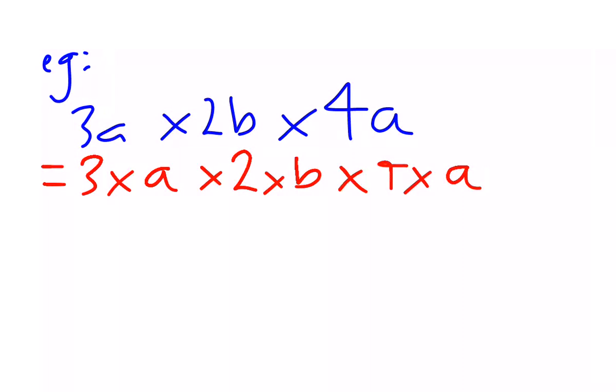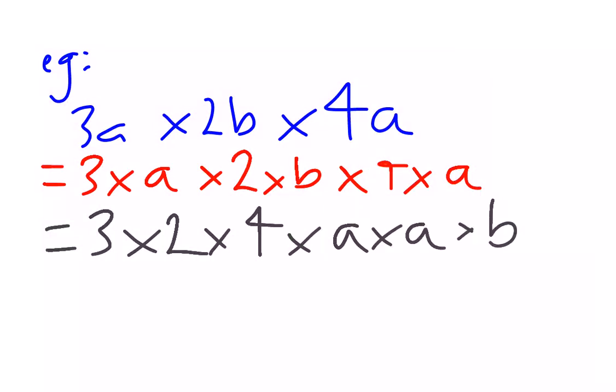So the first line of working I'd actually want is we rearrange the order so all the numbers, coefficients, are together. 3 times 2 times 4. Then we rearrange our remaining pronumerals so that we've grouped the same letters. Times a times a, times b. I would put this line of working in here, but I wouldn't worry about the previous lines, just to show you how that works.